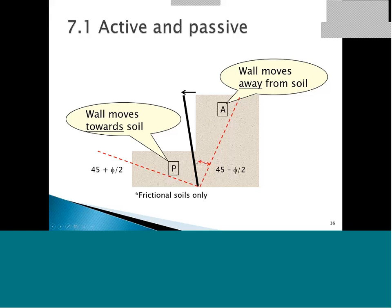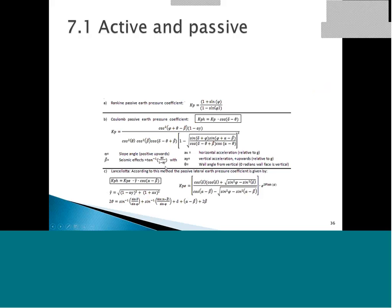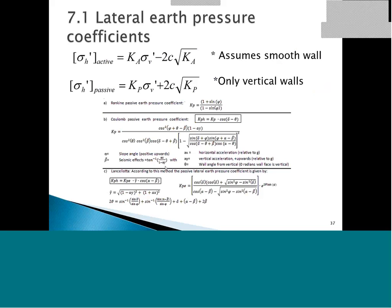With sand, we're forming an active wedge with the angle at 45 minus friction angle divided by 2, as the wall moves away from the soil. As the wall moves toward the soil, we have a passive wedge forming at 45 plus friction angle divided by 2. While this is idealized as a wedge, in reality it might be slightly curved — a log spiral response.